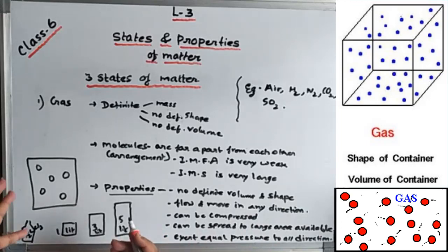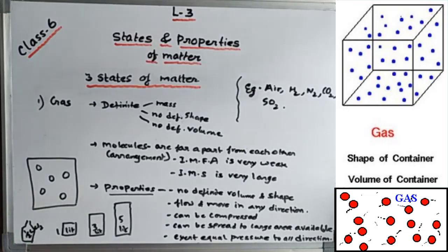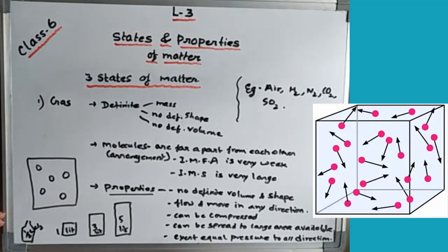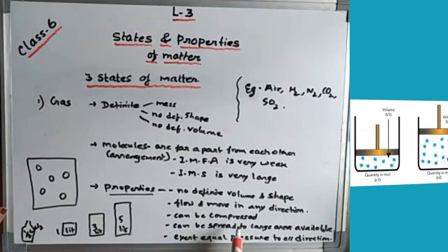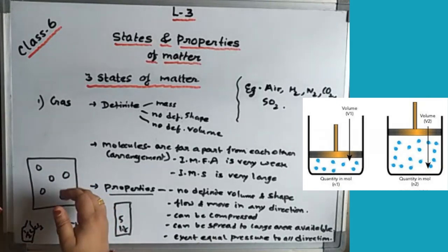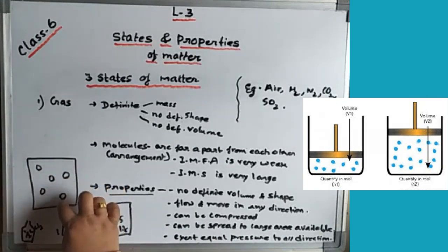Look at the air surrounding us — it can flow in any direction. When you spray a room spray, it doesn't go in just one direction — it spreads all over the room. So whatever space is provided to a gas, it will always occupy it. Gas can also be compressed — when pressure is applied, the molecules move closer together because there is so much gap between them.